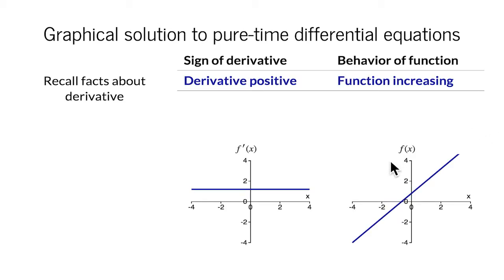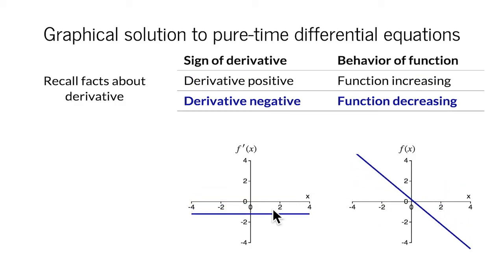Recall that a positive derivative indicates that a function is increasing. On the other hand, if the derivative is negative, then the function must be decreasing.